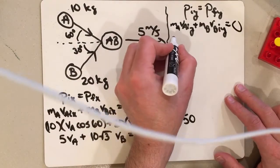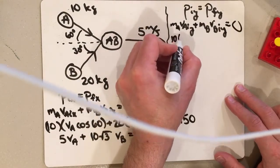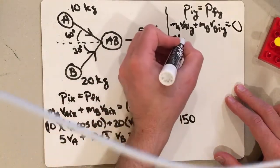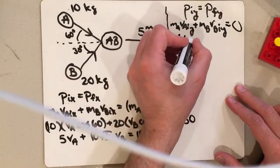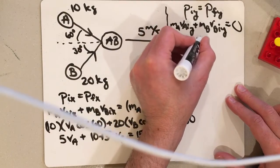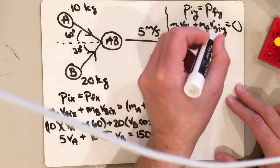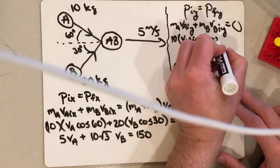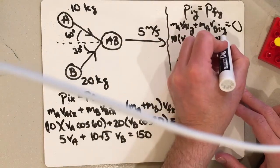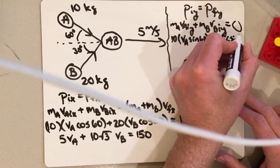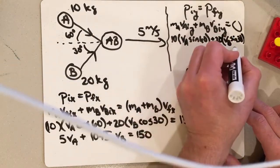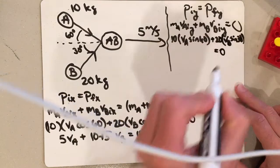So put in what we know. This is going to be 10 times VA. This time I want the Y component of the velocity, so that's going to be the sine of 60 plus 20 times VB sine of 30. And that all has to equal zero.